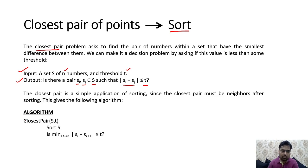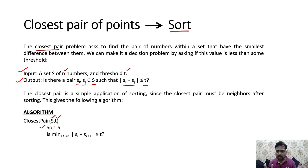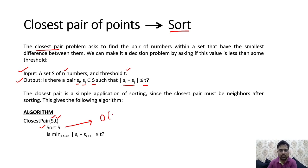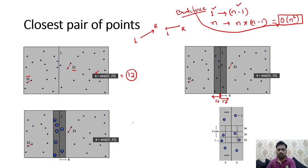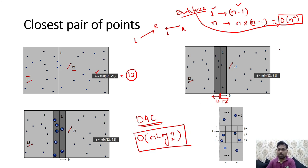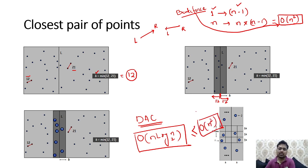The closest pair of points is an application of sorting. For the algorithm: S is a set of points, T is the threshold. We take all points in the set and sort them. Sorting gives a time complexity of O(n log n). Using divide and conquer we also expect O(n log n), which is less than the O(n²) of brute force. That is why we use divide and conquer with sorting.